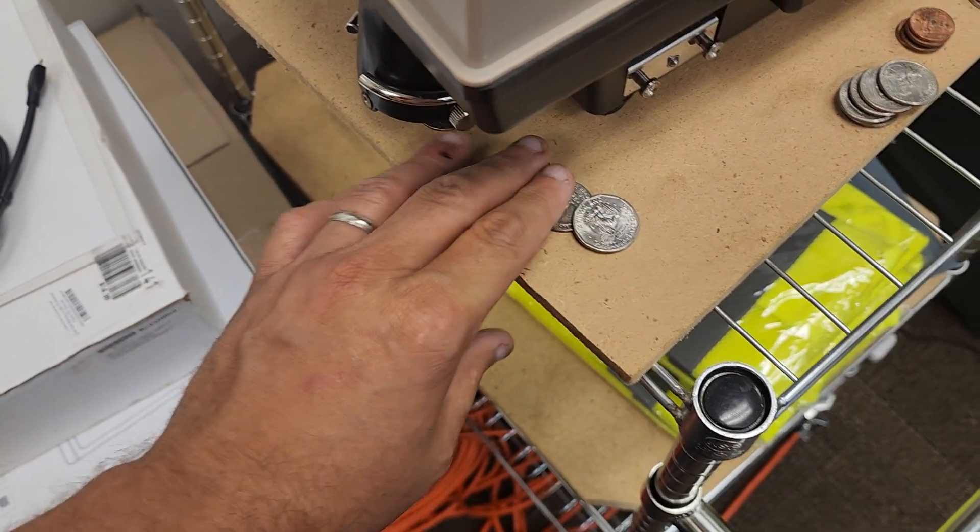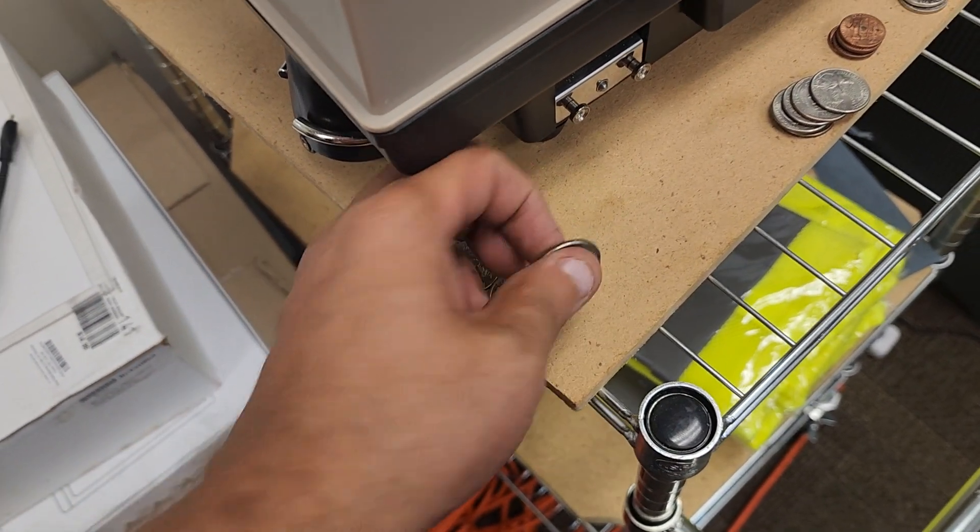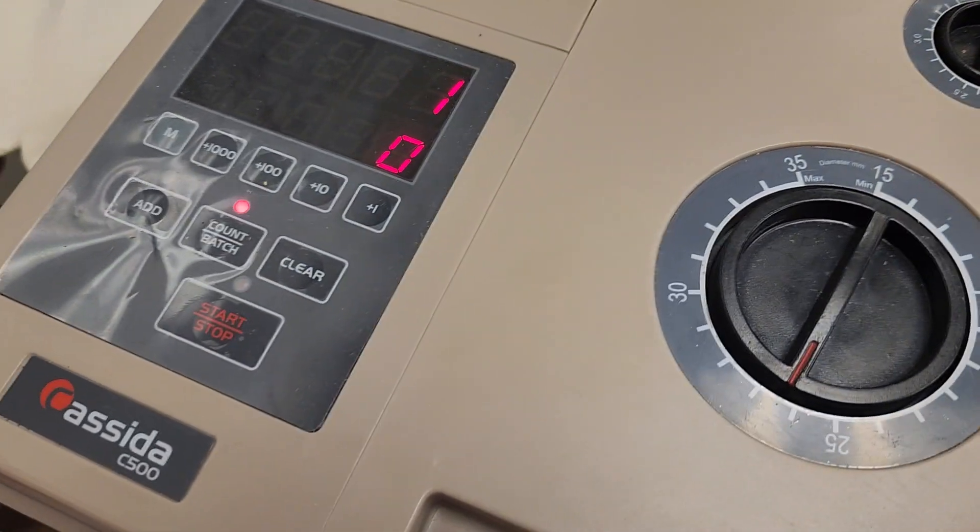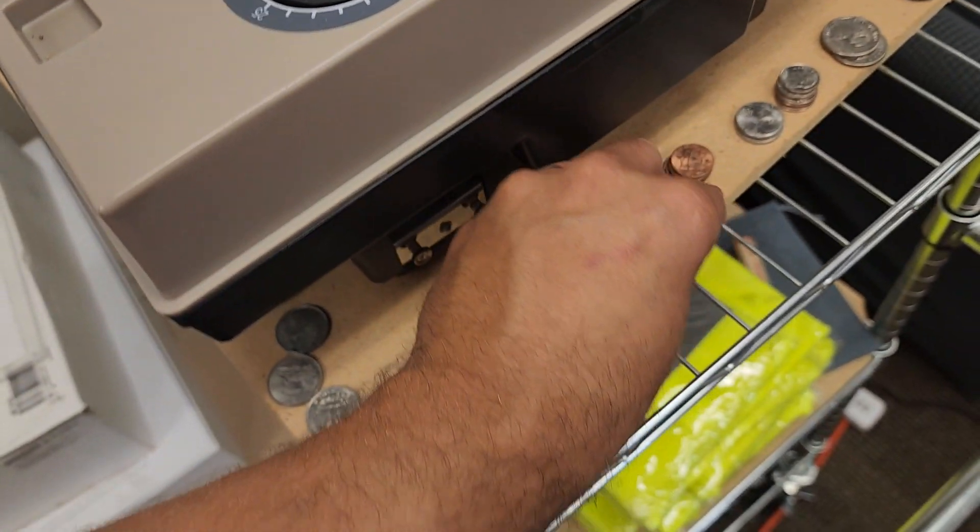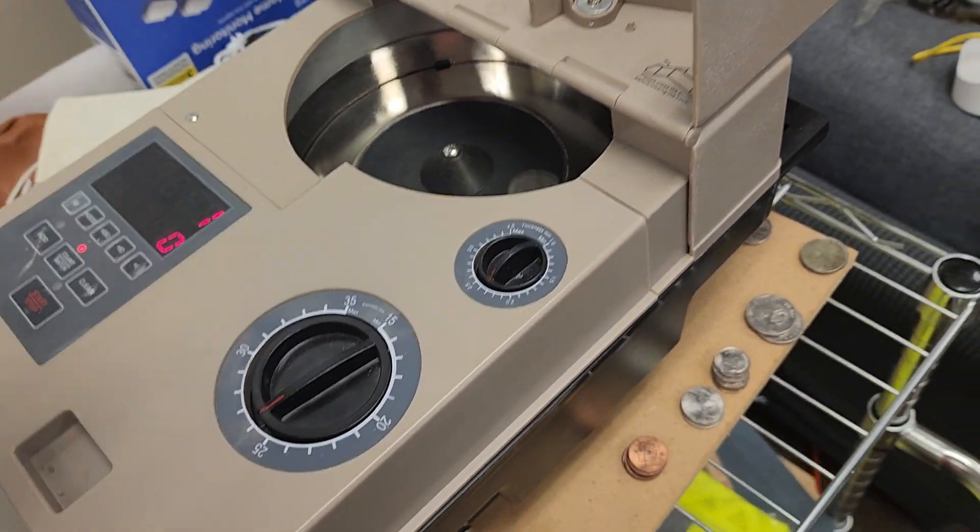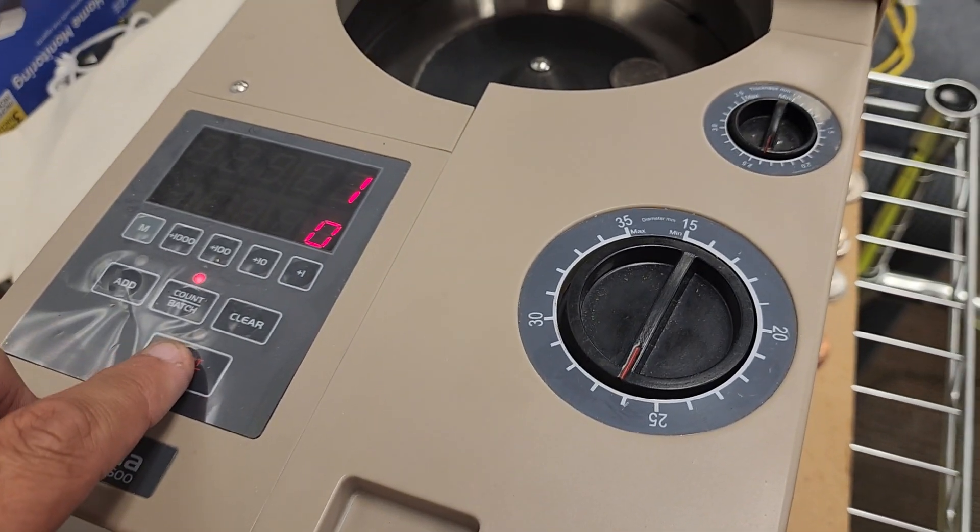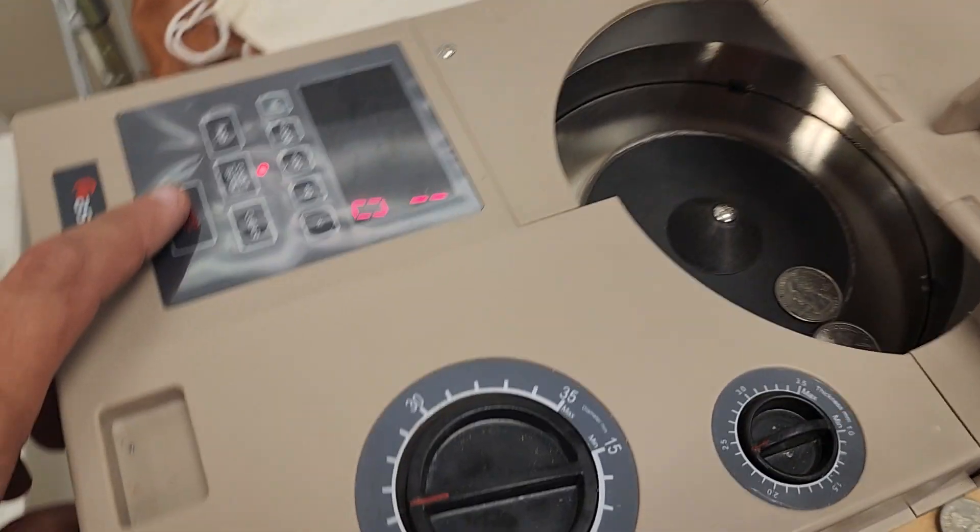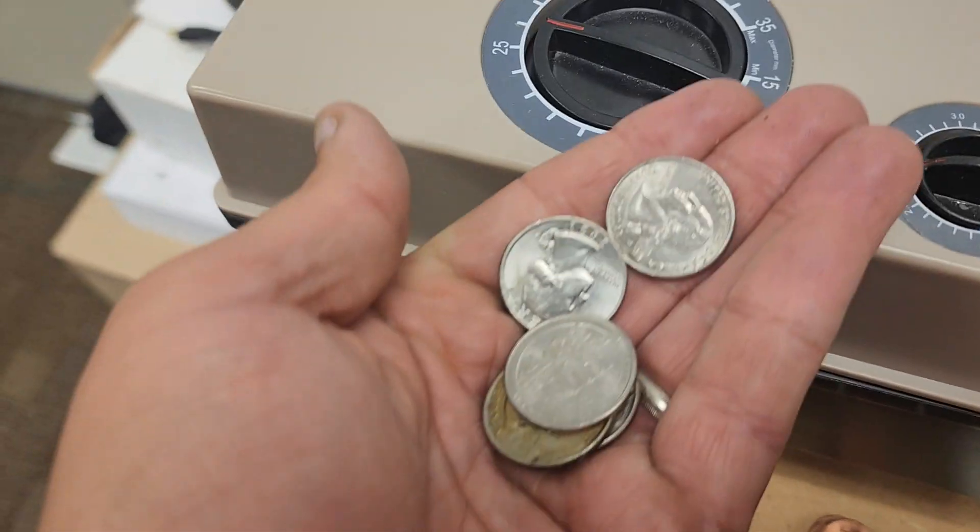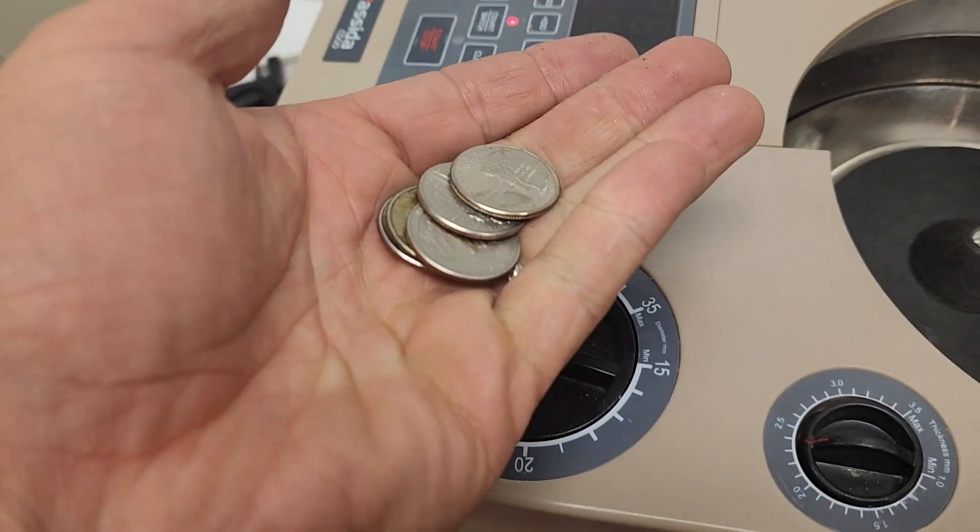The problem is if you're counting quarters and you get a dollar coin, it will jam. If you're counting dollars, it will off-sort all of your smaller change. So we'll throw in some quarters. It's continuing to be set to only count dollar coins and we end up with these in the off-sort. Hopefully that makes sense.